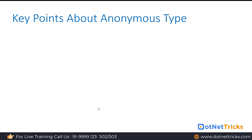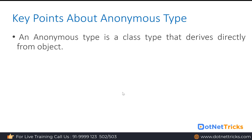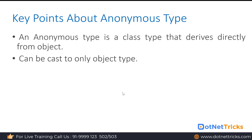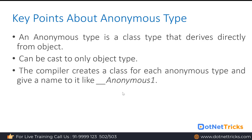Key points about anonymous type: Anonymous types are commonly used in C# code. An anonymous type is a class type that derives directly from object. Internally for the compiler, it is a class type derived from the object class in C#. You can cast an anonymous type only to an object type. Internally, whatever anonymous type you create, the compiler will create the anonymous type class and give it a name like '__AnonymousType1'.